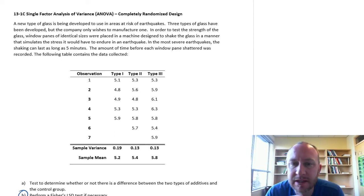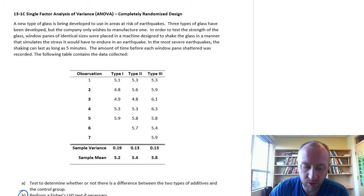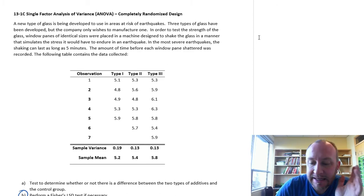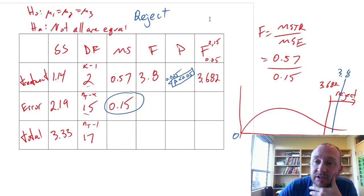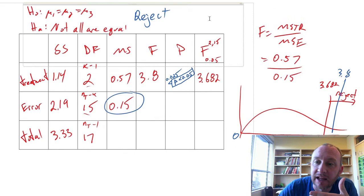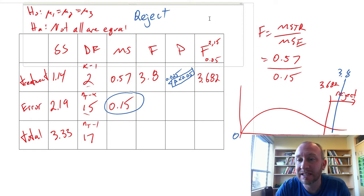Hello and welcome to this part B of this problem. We've already gone through and done the ANOVA here, and we found sufficient evidence to reject the null hypothesis. This means we have evidence to show that not all of the means in our population are equal. So of course the next question is, well where's the difference?